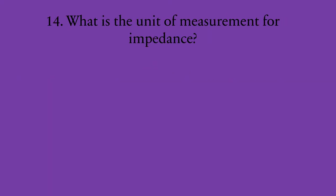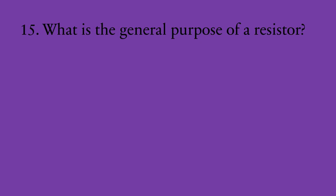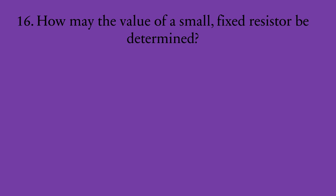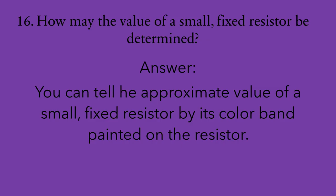Number fourteen: what is the unit of measurement for impedance? The answer is ohms. Number fifteen: what is the general purpose of a resistor? The job of a resistor is to limit or regulate the flow of current. Number sixteen: how may the value of a small fixed resistor be determined? You can tell the approximate value of a small fixed resistor by its color band painted on the resistor.